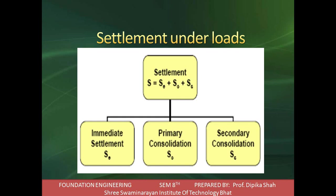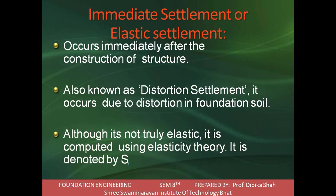The total settlement S is given by Si + Sc + Ss, the summation of all three types of consolidation. Settlement under load occurs in these three ways. Immediate settlement is also called elastic settlement - it occurs immediately after the construction of structure and is also known as distortion settlement. It occurs due to distortion in the foundation. Although it is not truly elastic, it is computed using elasticity theory and is denoted by Si.